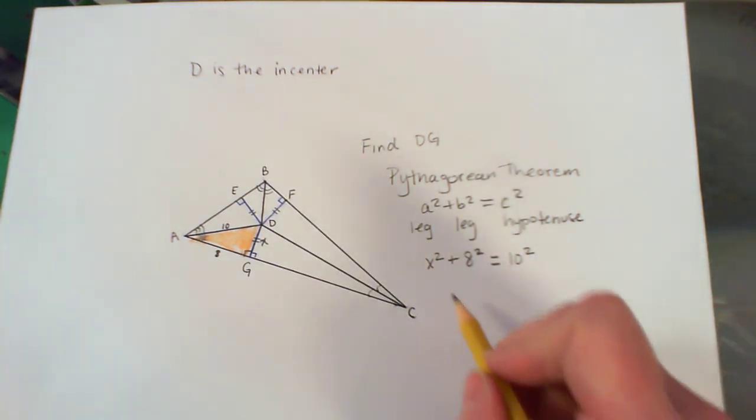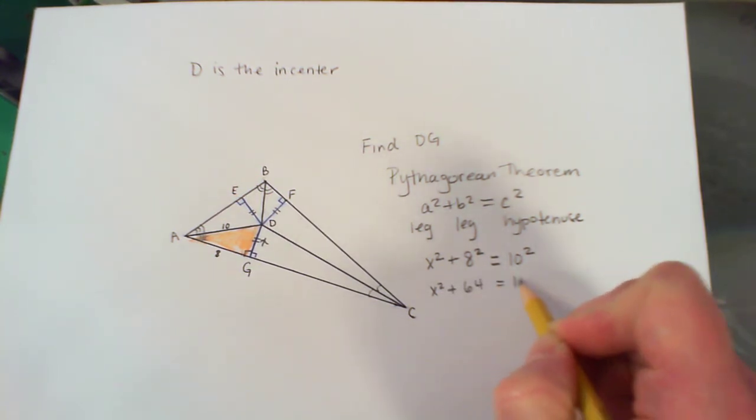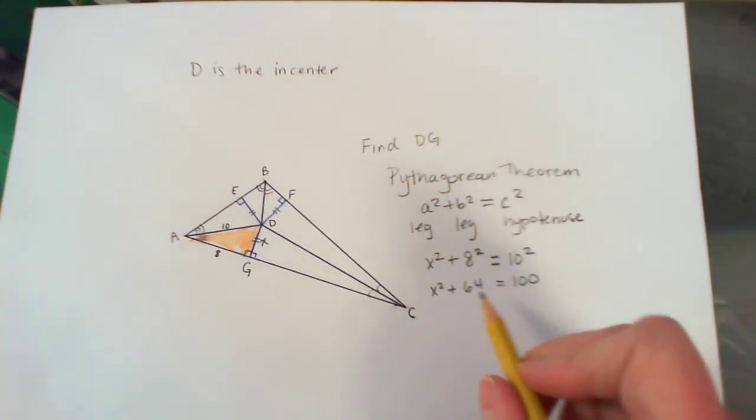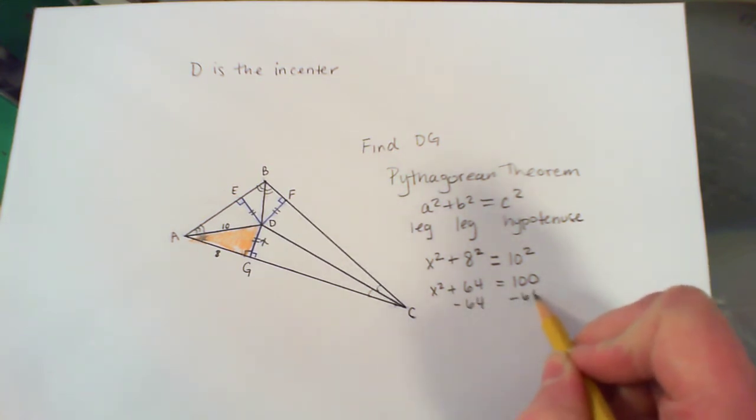So now you solve this similar to other equations. So we're going to have X squared plus 64 equals 100. And then I would subtract 64 from both sides. So I get X squared equals 36.